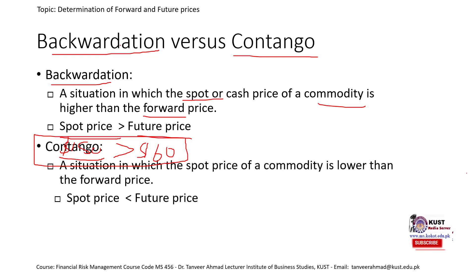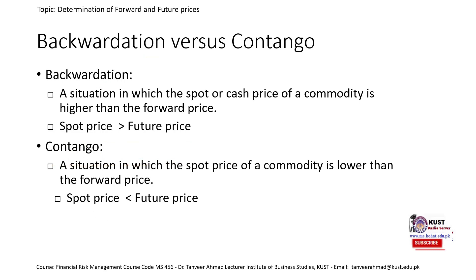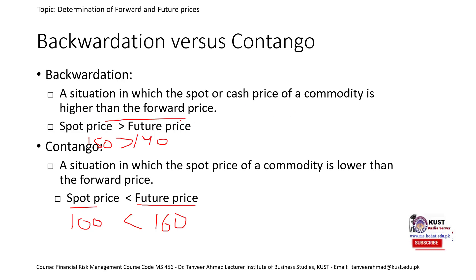Contango is the opposite of backwardation. In contango, the spot price is less than the futures price. So if an asset is currently being sold in the market at $100 and the forward price is $140, then because the spot price is lower than the future price, that situation is called contango. So these are the two concepts of backwardation and contango.